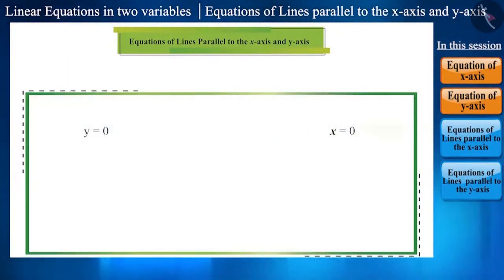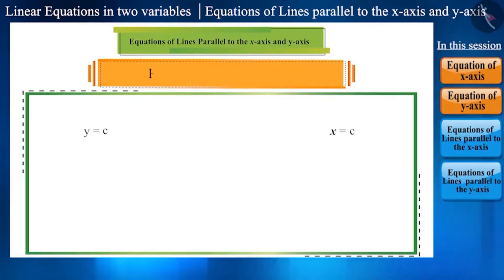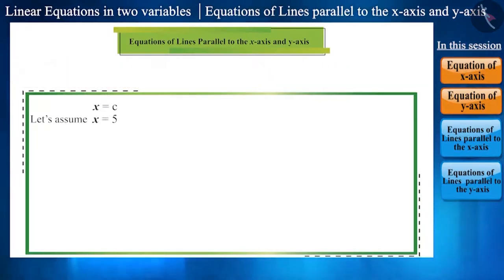Friends, now, how will the graph look if instead of y is equal to 0 and x is equal to 0, it was y is equal to c and x is equal to c? That means, a constant term or any number. Now, let's assume x as 5,